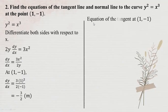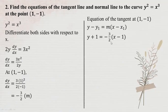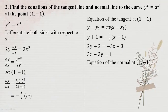So the equation of the tangent is 0. The point is (1,1). This is the equation of the tangent. The equation of the tangent.